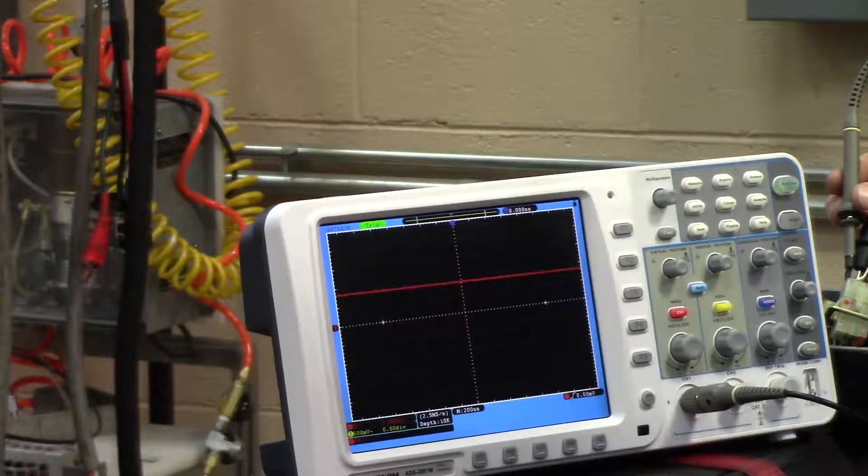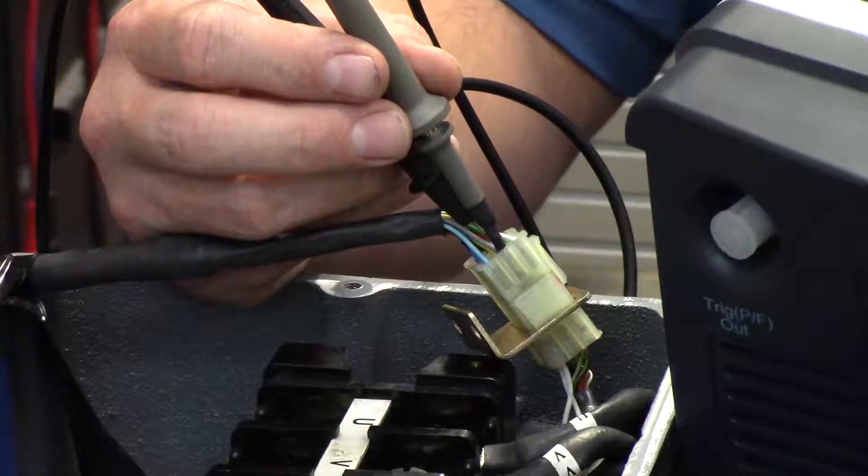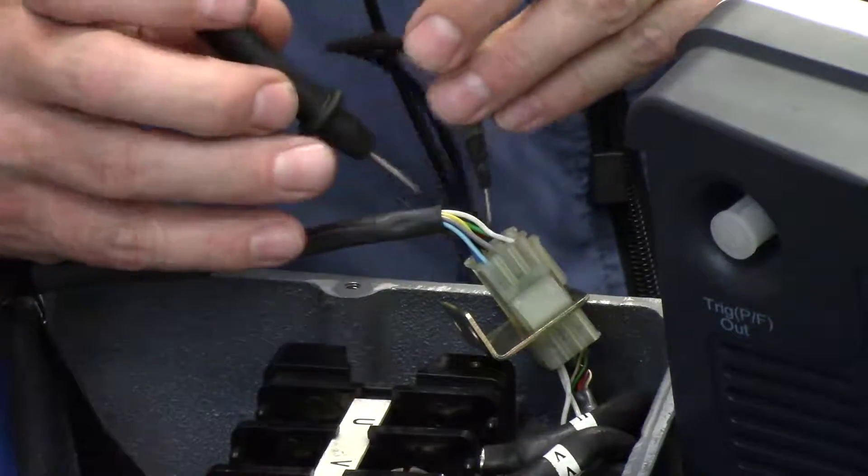And so as long as you see that blip, you know you have your Z, then flip the probe and the probe ground around.